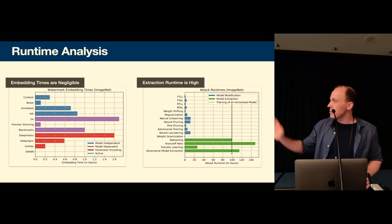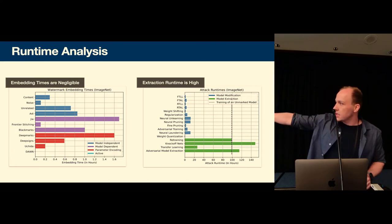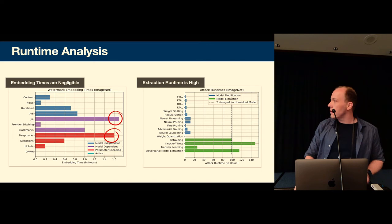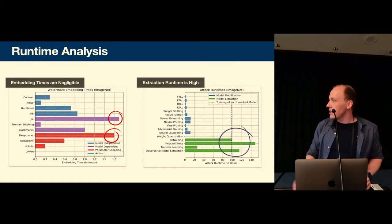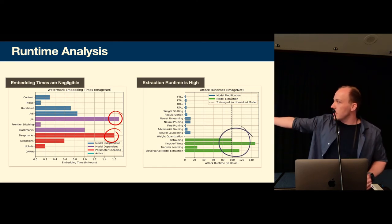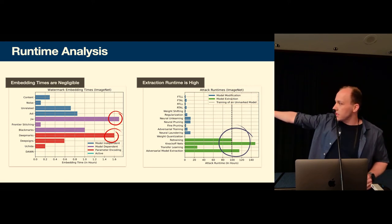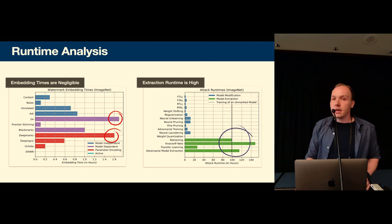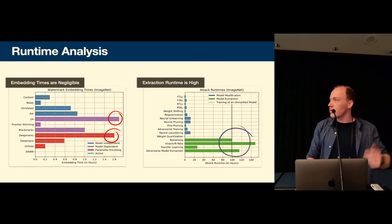So we look at the schemes and the embedding times of the watermarking schemes. So in general we observe that embedding is not a problem it's very fast so on the x-axis is always the time and on the left graph we have at most one and a half hours which is absolutely fast whereas for the attacker they need a lot more time to run some of these attacks.